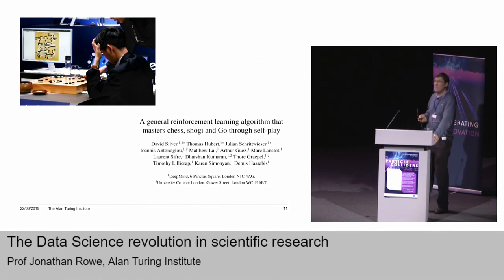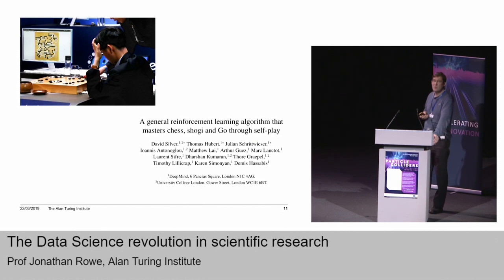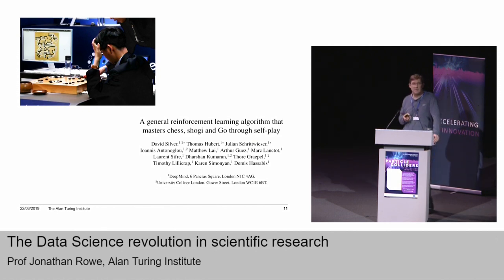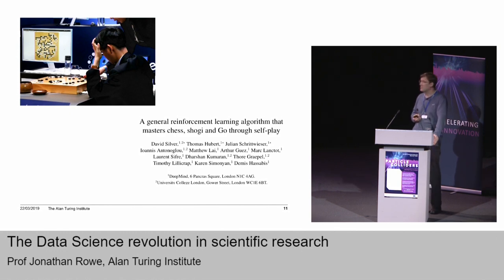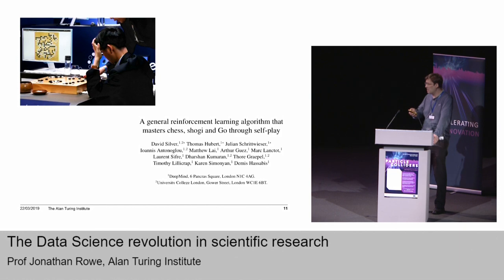Another breakthrough you've probably heard of, using lots and lots of computer power and data and learning — this time a reinforcement learning algorithm — was to play the game Go. It was thought for a long time that this would be pretty much impossible for computers to crack. DeepMind, which is now part of Google, managed to produce their AlphaGo player, which was as good as human experts.